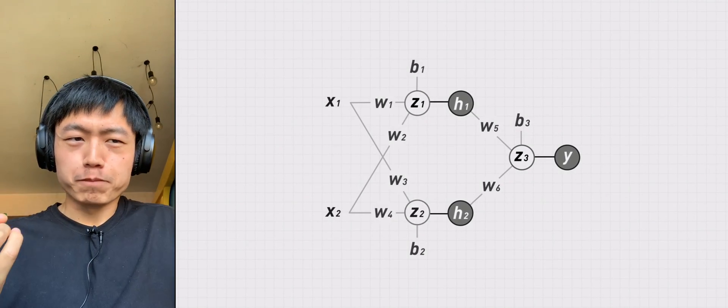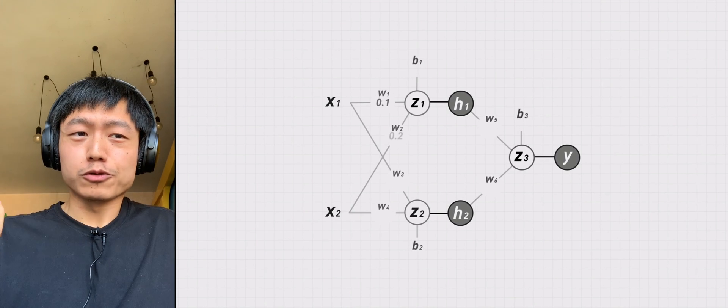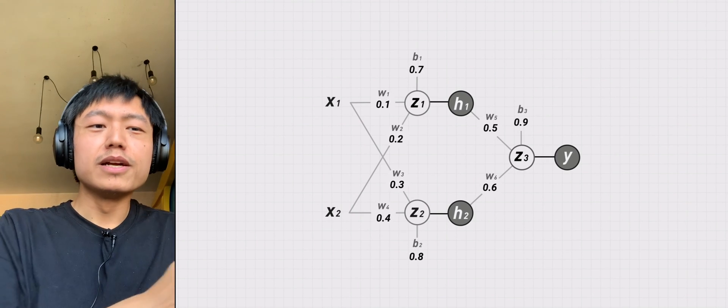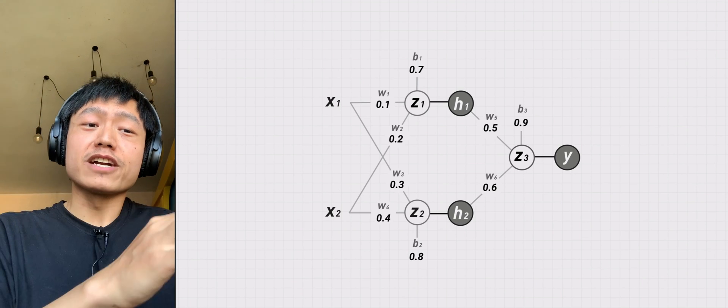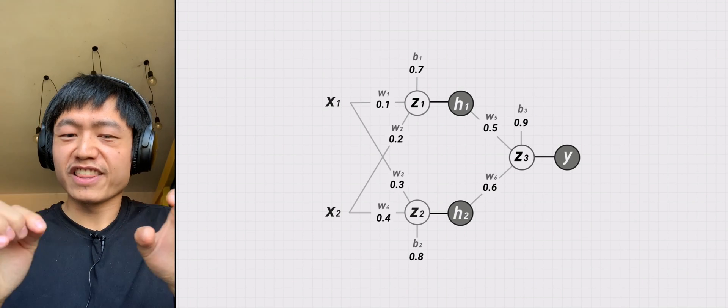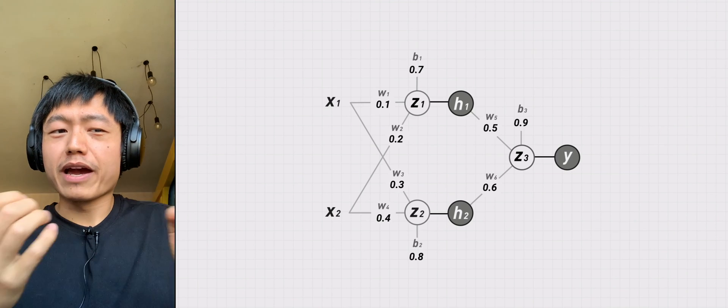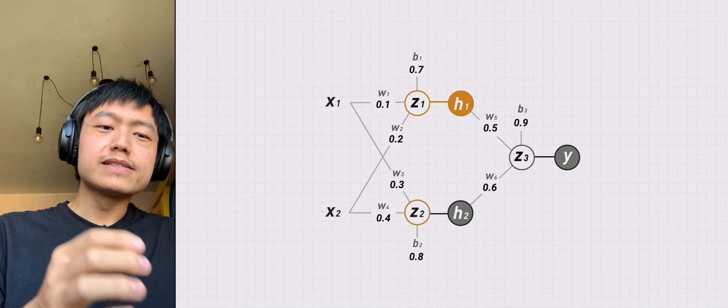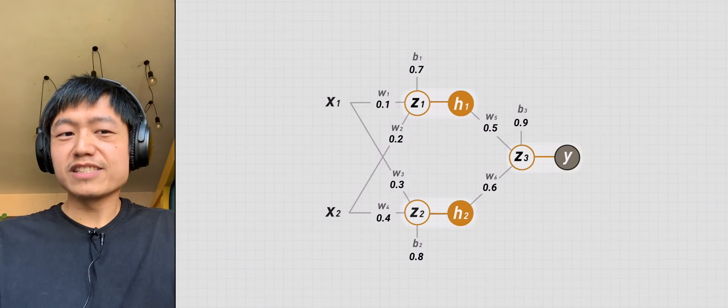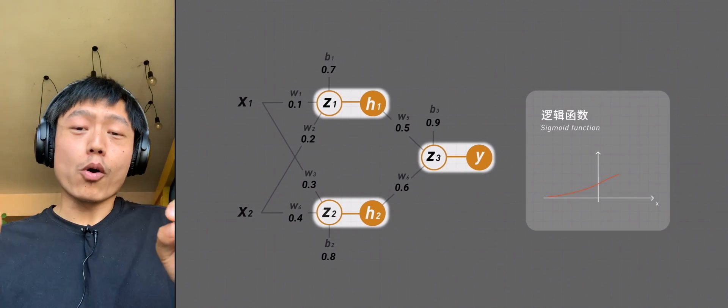The first is to set the initial values of the 9 parameters. We first set them casually, then we need to determine the activation function in these 9 places. We can also set them at our will. c1 to h1, c2 to h2, c3 to y, they are all sigmoid.